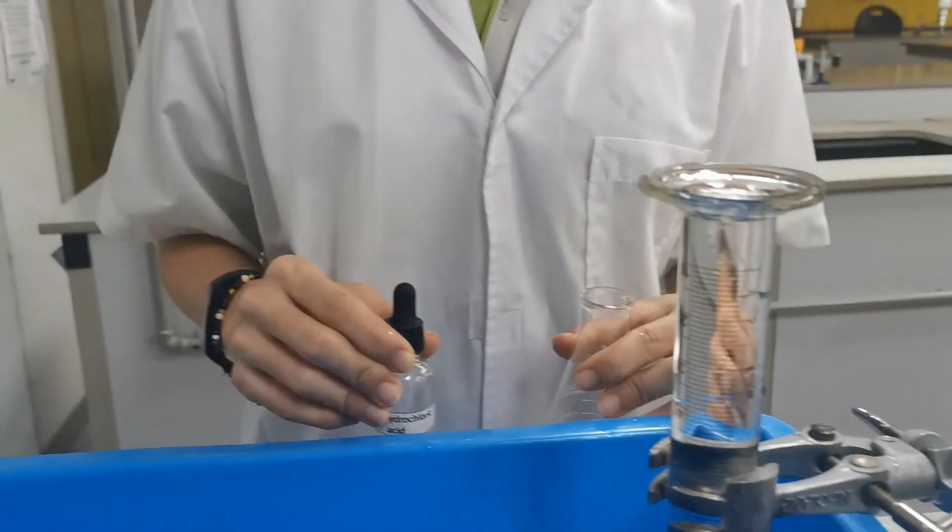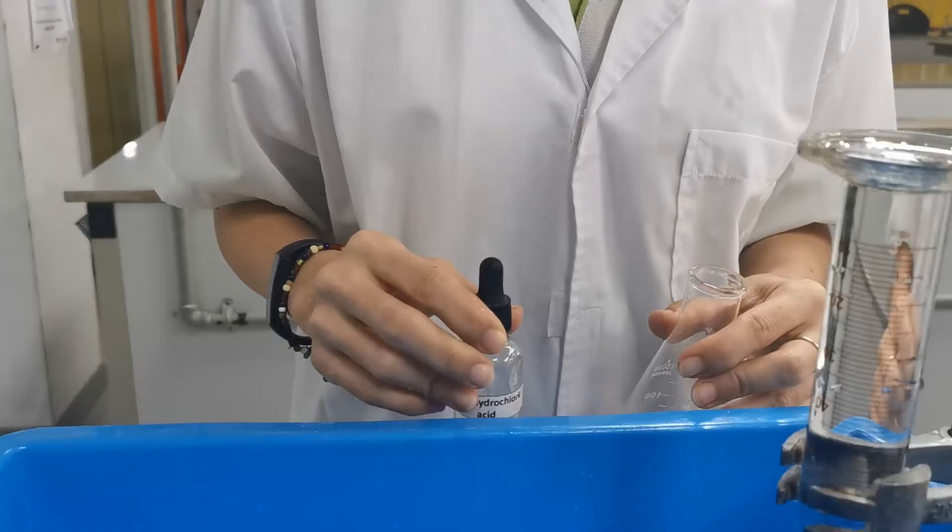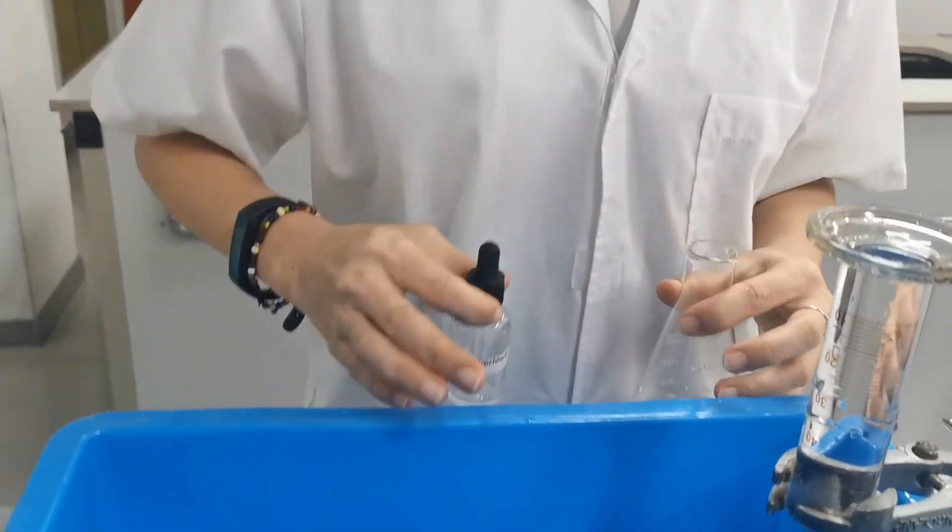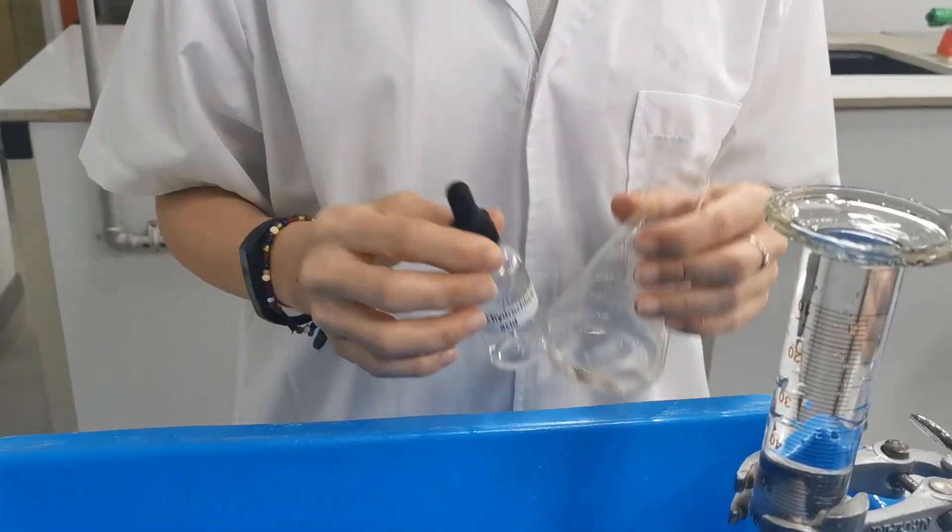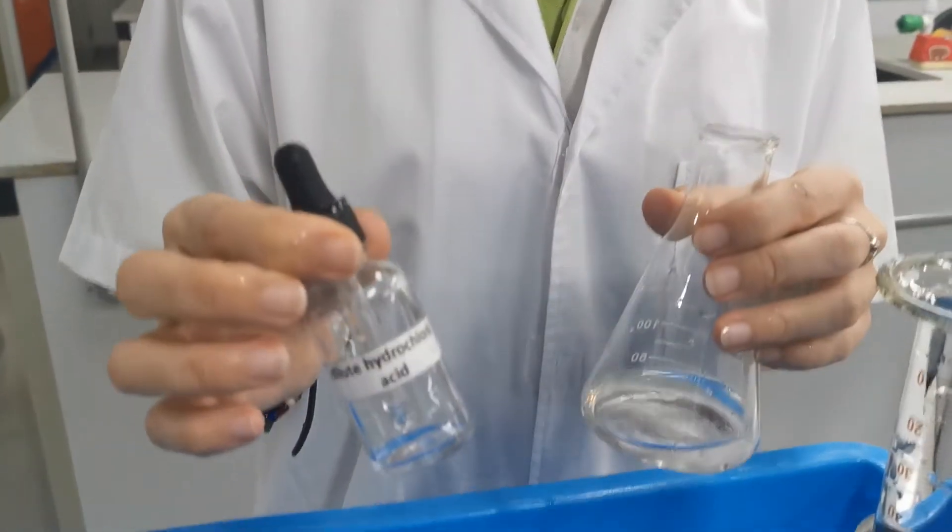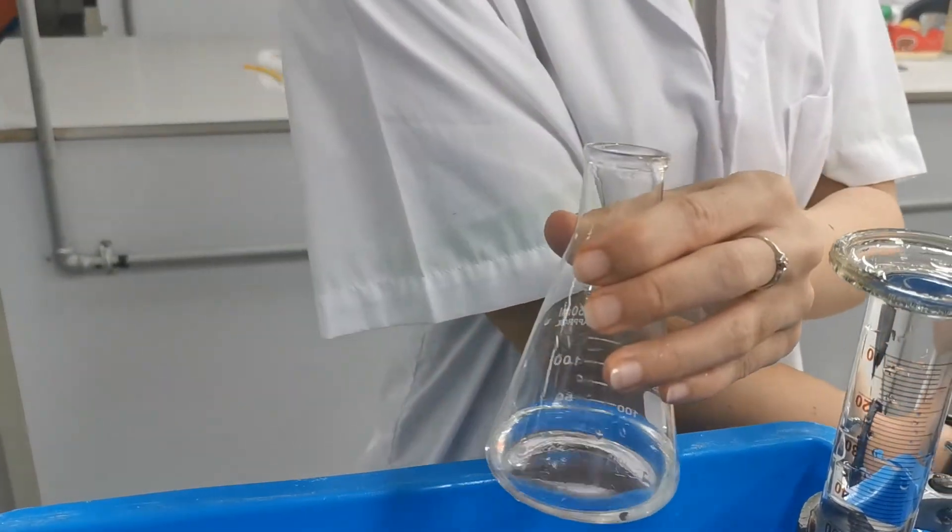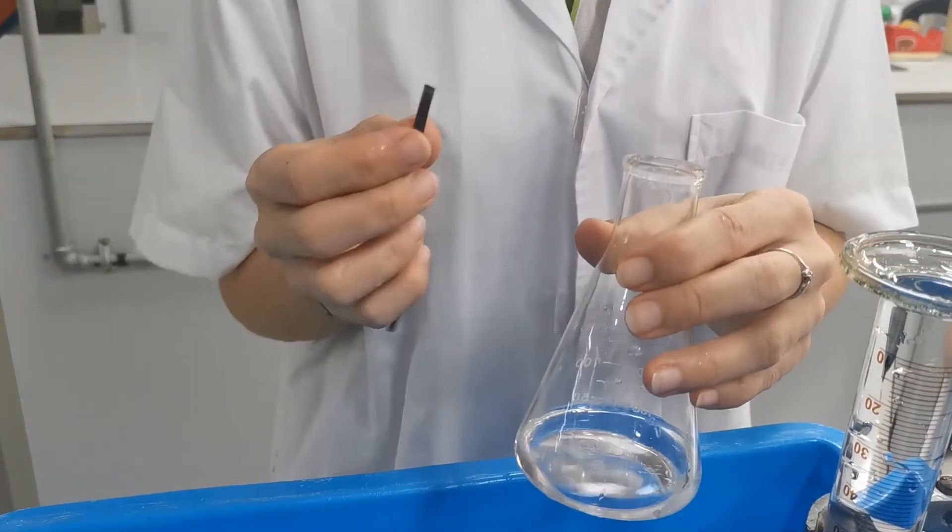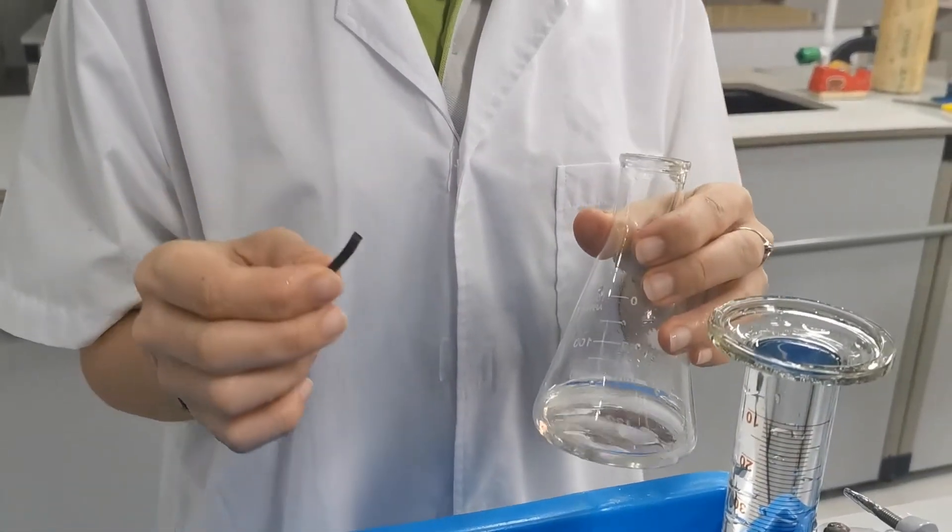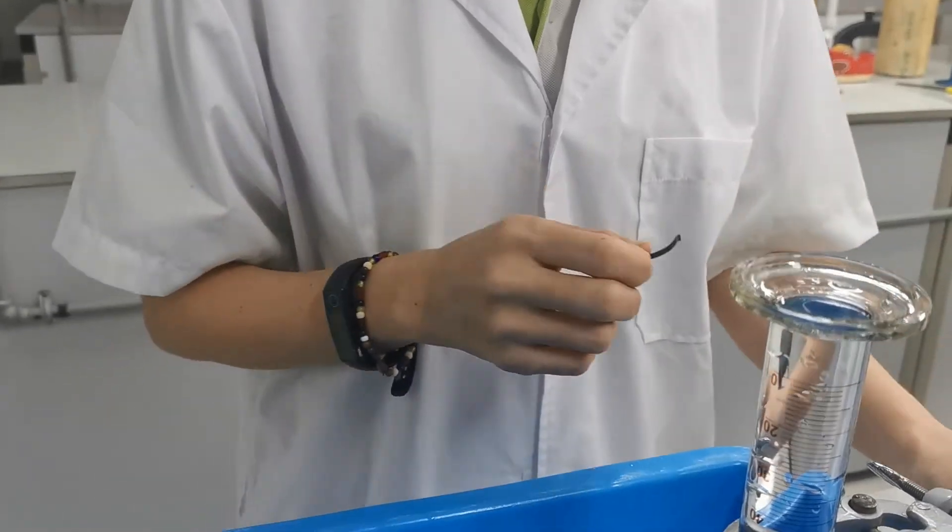As an example for gas collection using this method, we're going to use a reaction of hydrochloric acid, which I have poured into my conical flask, and magnesium ribbon. Before I drop this magnesium ribbon in, I have to prepare my delivery tube and stopper.